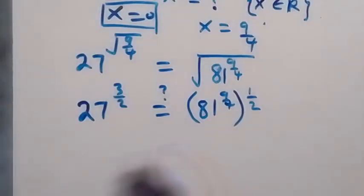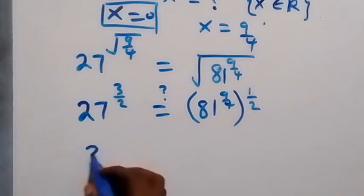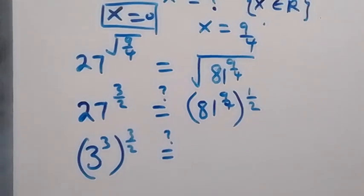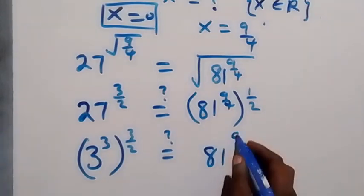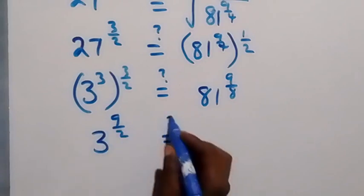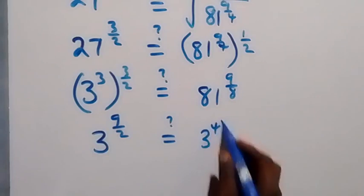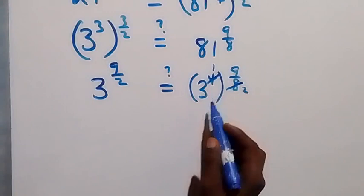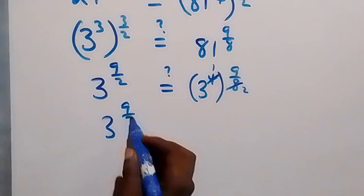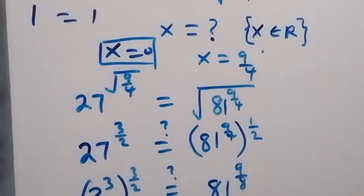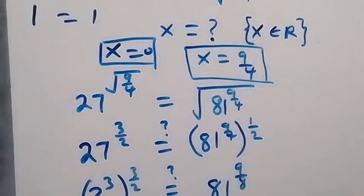We write 27 as 3 raised to power 3, then raised to power 3 over 2, and the powers multiply to give 3 raised to power 9 over 2. On the right side, 81 is 3 raised to power 4, then raised to power 9 over 8. Multiplying 4 times 9 over 8, the 4 and 8 simplify to give 9 over 2. So the right side is also 3 raised to power 9 over 2. The left hand side equals the right hand side, confirming x equals 9 over 4 is correct.